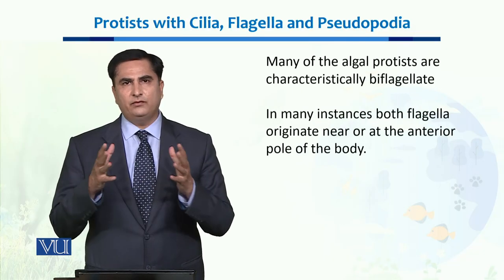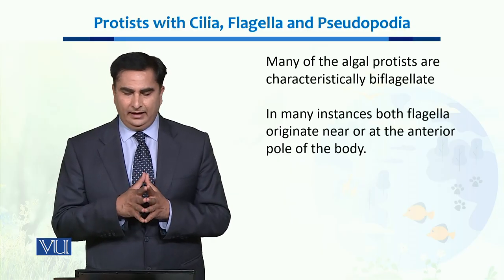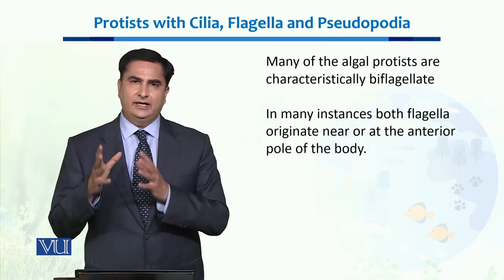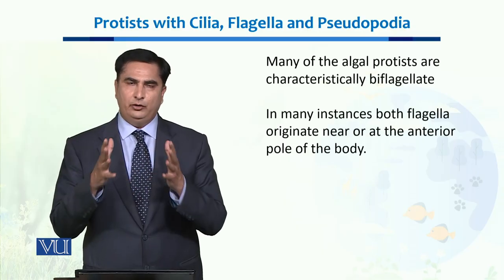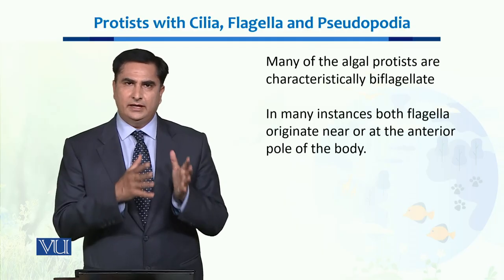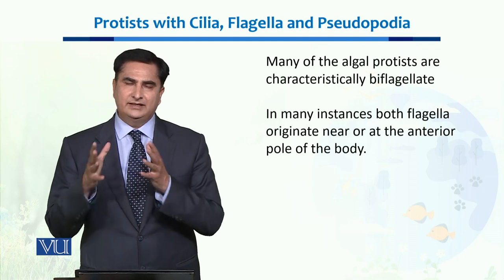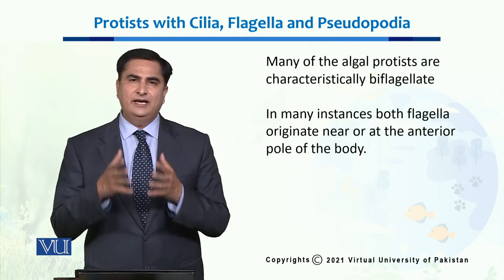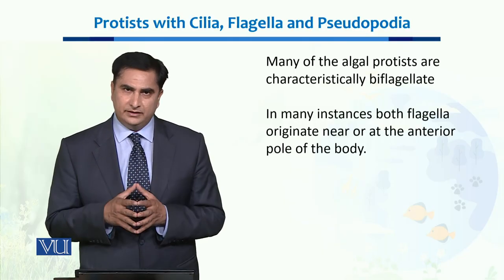Many algal protists are characterized by flagella, and in many instances both flagella originate near the anterior side of the body. The diagram of a typical Chlamydomonas, which we will study in later units as well, provides a classic example of a biflagellate organism. These are all the different locomotory organs used in the phylum Protista.